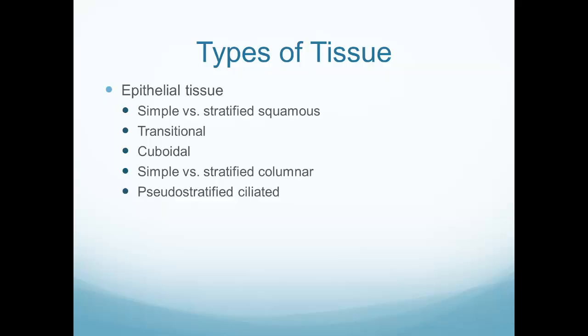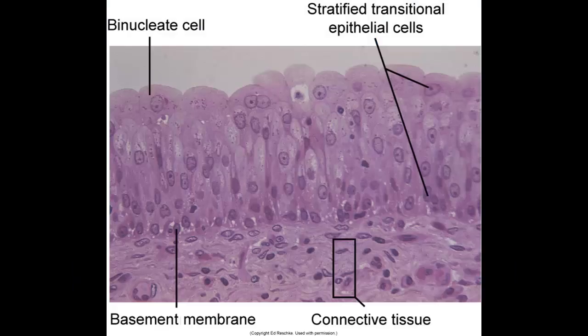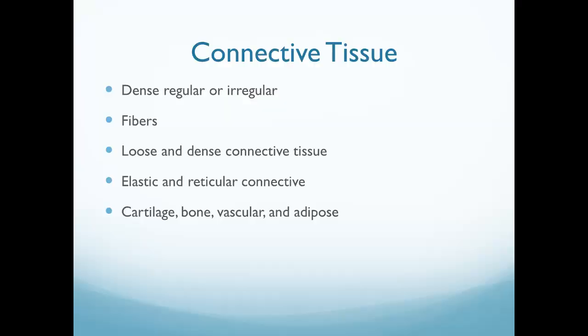We have different types of tissue formed in the body. Epithelial tissue is a very common and important type — it's the lining tissue of most organs. We can differentiate epithelial tissue as either simple or stratified squamous, transitional cuboidal, simple or stratified columnar, or pseudostratified ciliated epithelial tissue. This microscope picture shows stratified transitional epithelial cells, connective tissue, and the basement membrane combining them together.